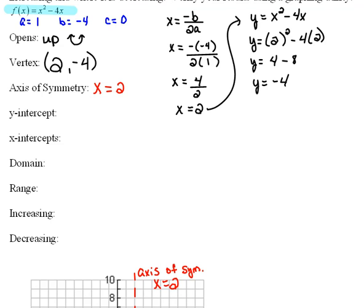Okay, so far we know that this thing opens up. We know that our vertex is at (2, -4), and we know our axis of symmetry is x equals 2. So we found this much.